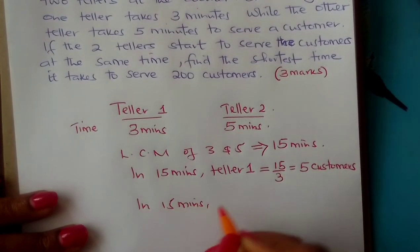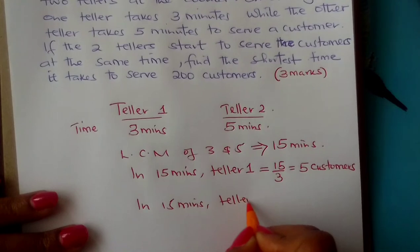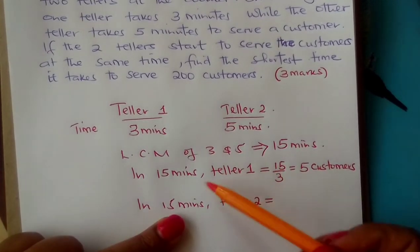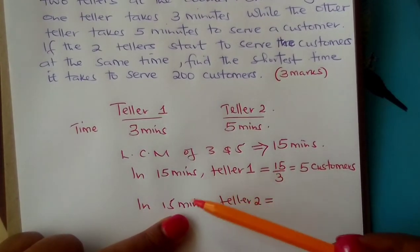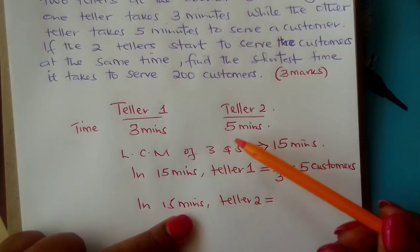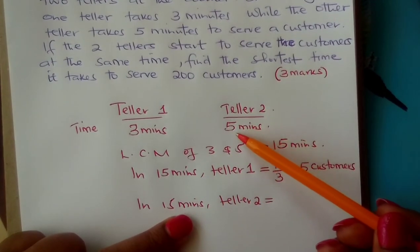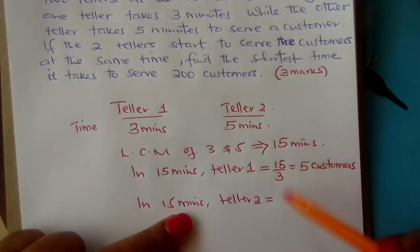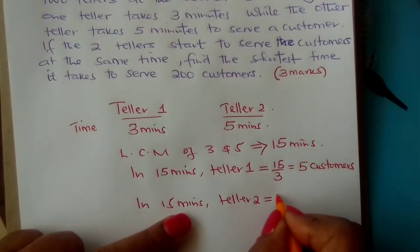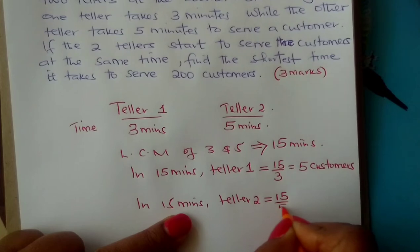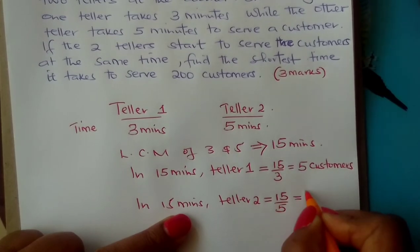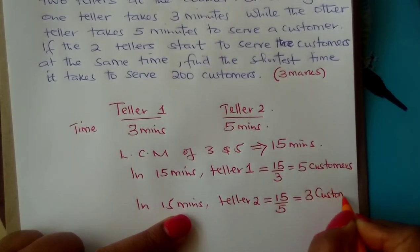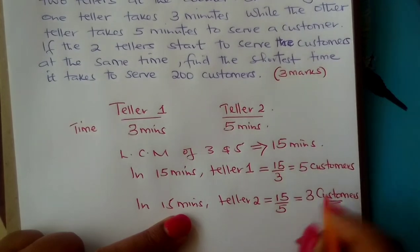In the same 15 minutes, teller number two will serve how many customers? Teller number two serves one customer within five minutes, and therefore 15 minutes divided by five means he will have served only three customers.